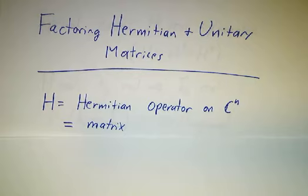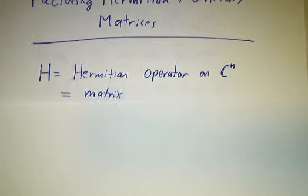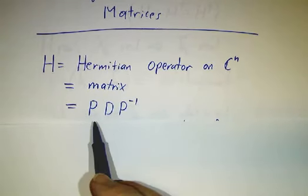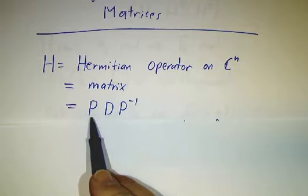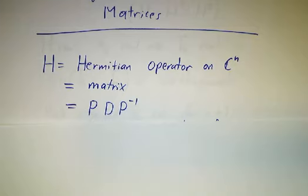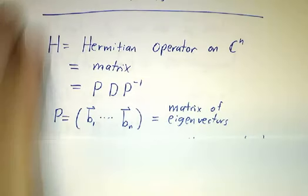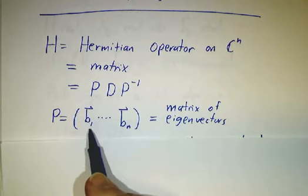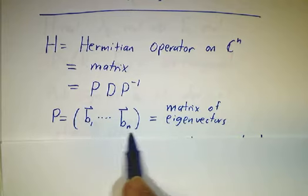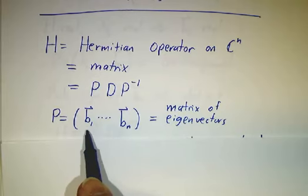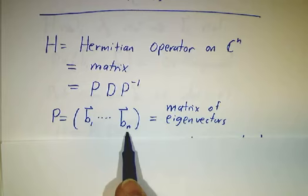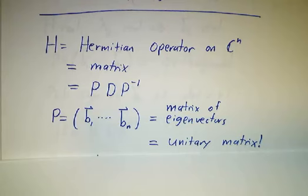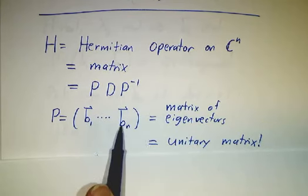So let's suppose we have a Hermitian operator on C^n, in other words, an n by n Hermitian matrix. We can write that as PDP inverse because it's diagonalizable. The matrix P has all the eigenvectors, and the matrix D has all the eigenvalues. So we have this matrix of eigenvectors, but remember, the eigenvectors of a Hermitian operator are orthogonal. You can always pick an orthonormal basis of eigenvectors. So without loss of generality, we can assume that these eigenvectors are all orthonormal, and so that makes P a unitary matrix, because any matrix whose columns are orthonormal is unitary.